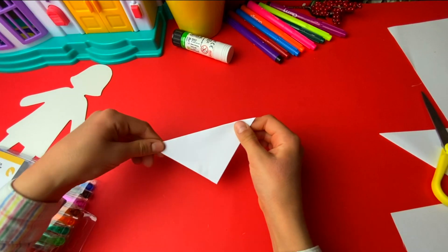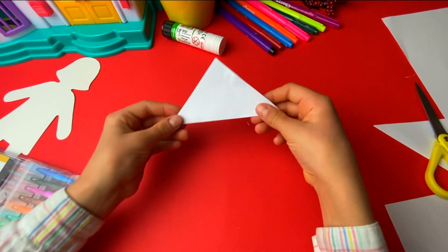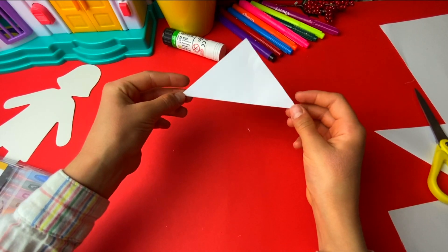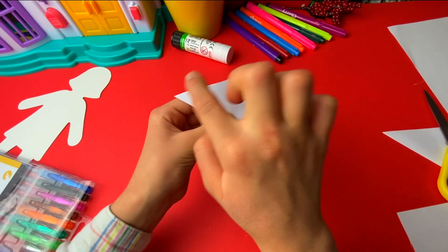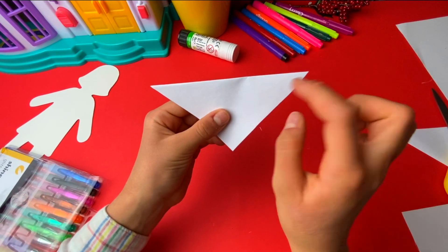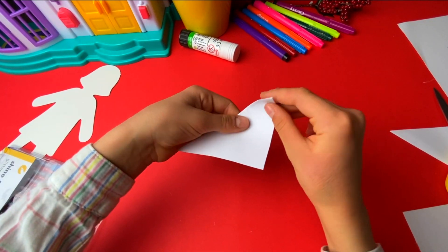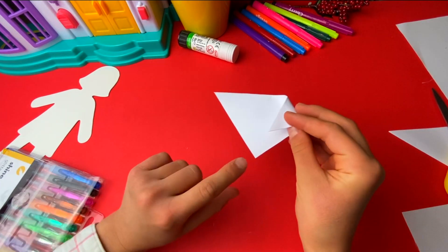And now we get these pointer sides, so you have a triangle, like a bit of a triangle. And you need to get the longer side to be up, like this, and now we get these corners to the middle.